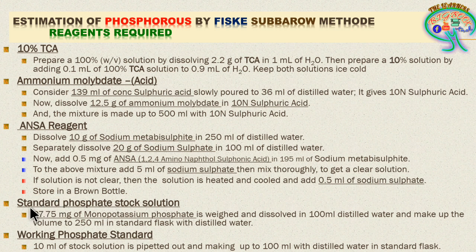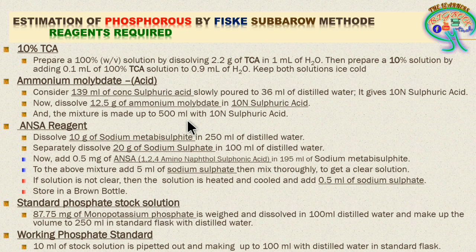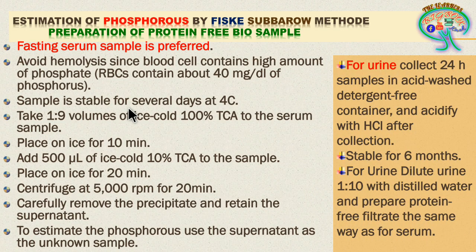To prepare the standard phosphate stock solution, weigh 87.75 milligrams of monopotassium phosphate, dissolve in 100 ml distilled water, and make up the volume to 250 ml in a standard flask. For the working phosphate solution, take 10 ml from the stock solution and make it up to 100 ml with distilled water. Calculations can be adjusted according to your lab requirements.